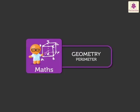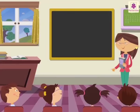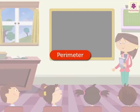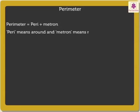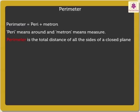Perimeter. Today, let's learn how to find the perimeter of a polygon. The word perimeter comes from two Greek words: peri and metron. Peri means around and metron means measure. Thus, perimeter is the total distance of all the sides of a closed plane figure.